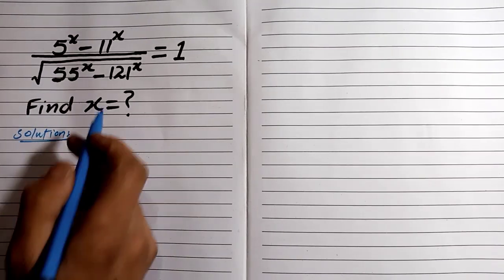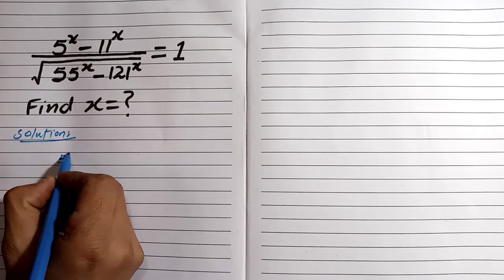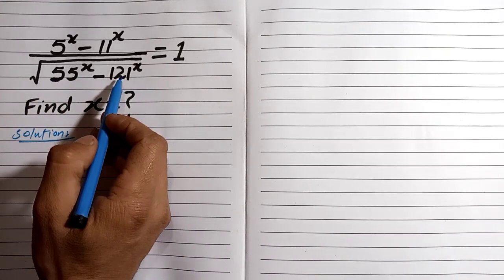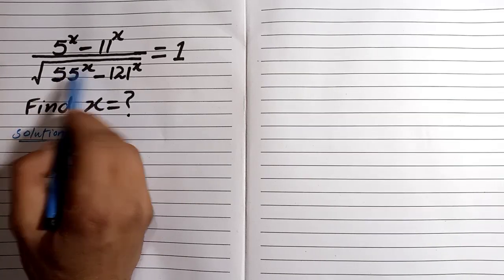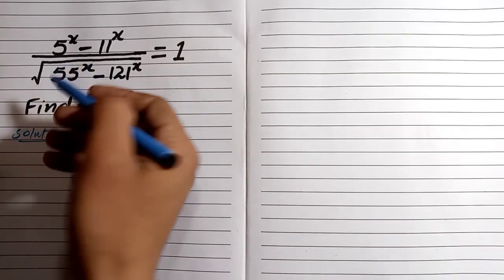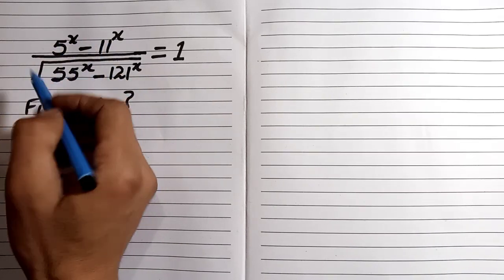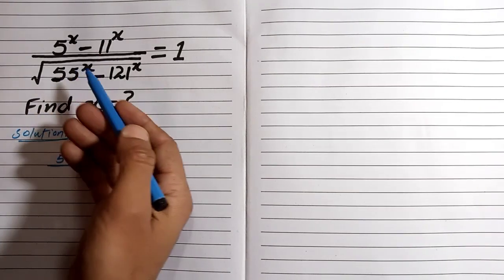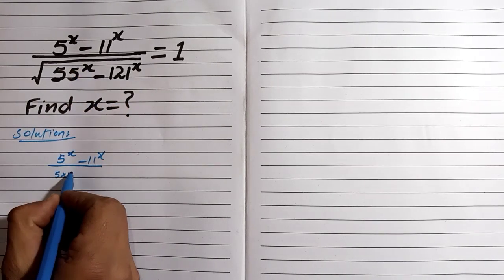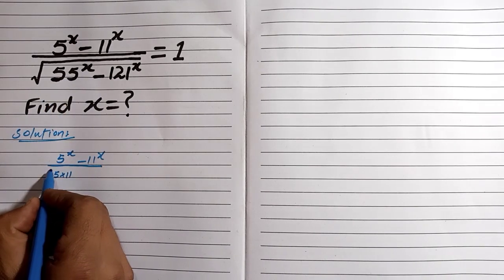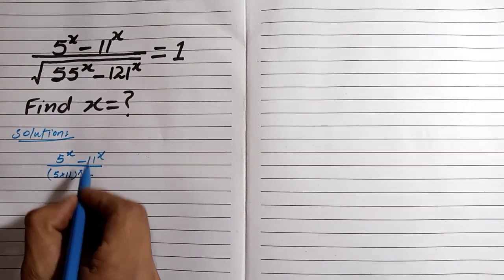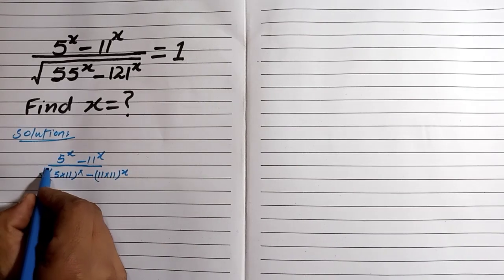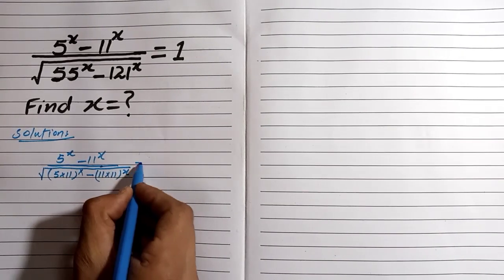First of all, in this equation we have 5^x minus 11^x. We can simplify this term — we write 55 into its factors: 5 multiply 11, which is 55. We can write x minus 121, which is 11 multiply 11, to the power x, and the root is equal to 1.